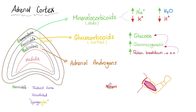What does aldosterone do? It increases two things and decreases two things. It reabsorbs sodium and water, and it secretes potassium and hydrogen in the kidney — keep my sodium and water, but dump my potassium and hydrogen. What does cortisol do? As a glucocorticoid, it increases glucose. It does this through gluconeogenesis, glycolysis, and by breaking down proteins into amino acids to generate more glucose via gluconeogenesis. And the adrenal androgens are just androgens.